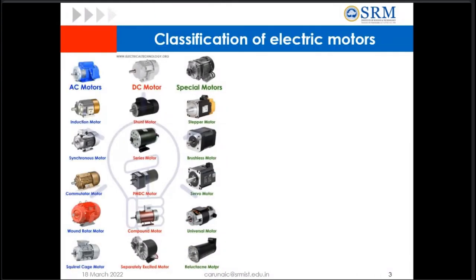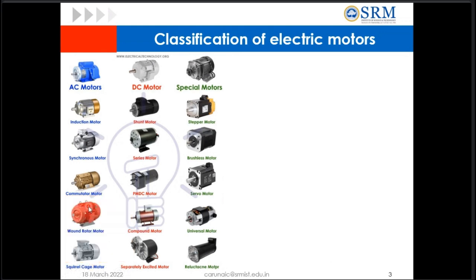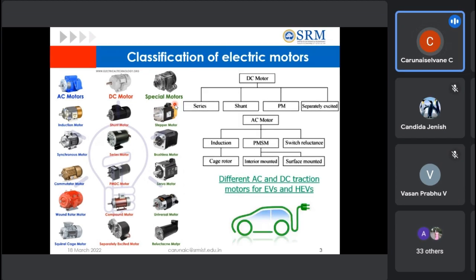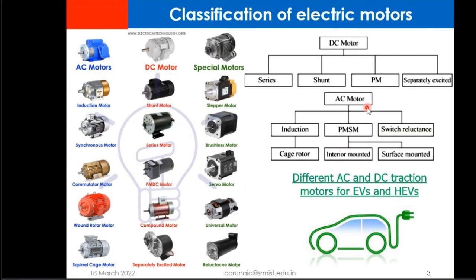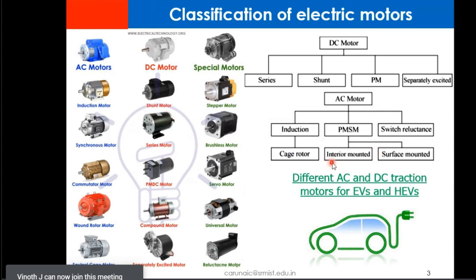To begin with, these are the available electrical motors in the field. We have these many motors available now in AC category, DC category, as well as some special motors. For traction application, especially for EV as well as hybrid electric vehicle application, in DC they are using DC series shunt, permanent magnet and separately excited, whereas in AC motor you see induction, PMSM, switched reluctance motor, and others. So these are the traction motors used so far in this field.